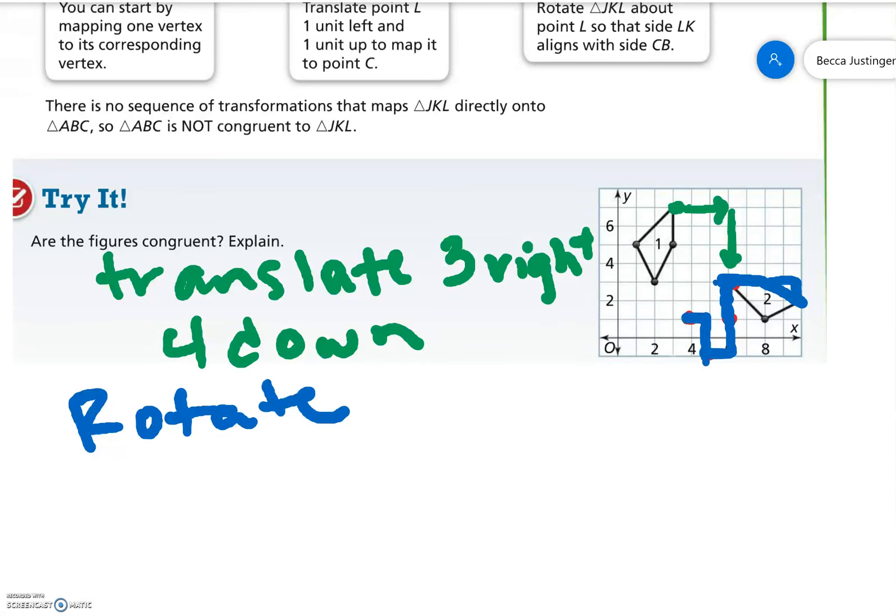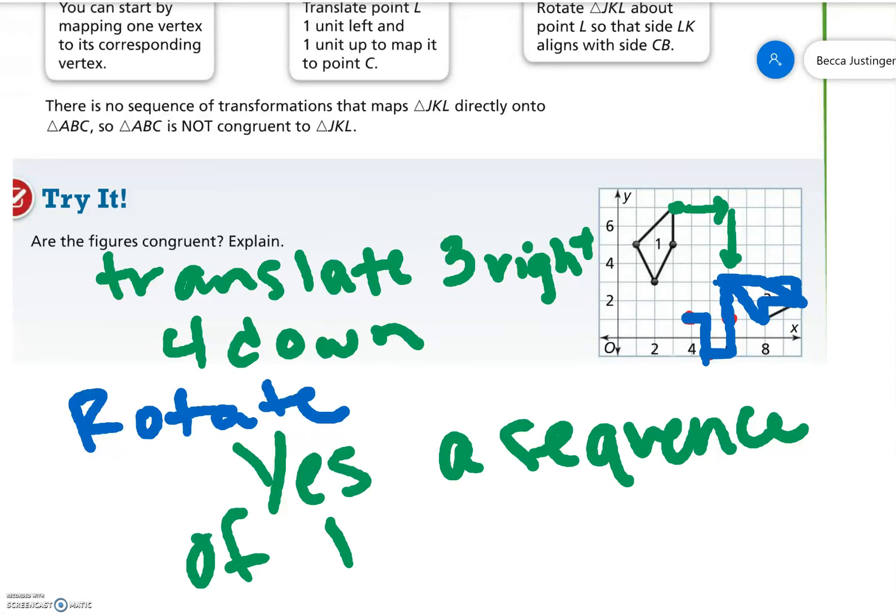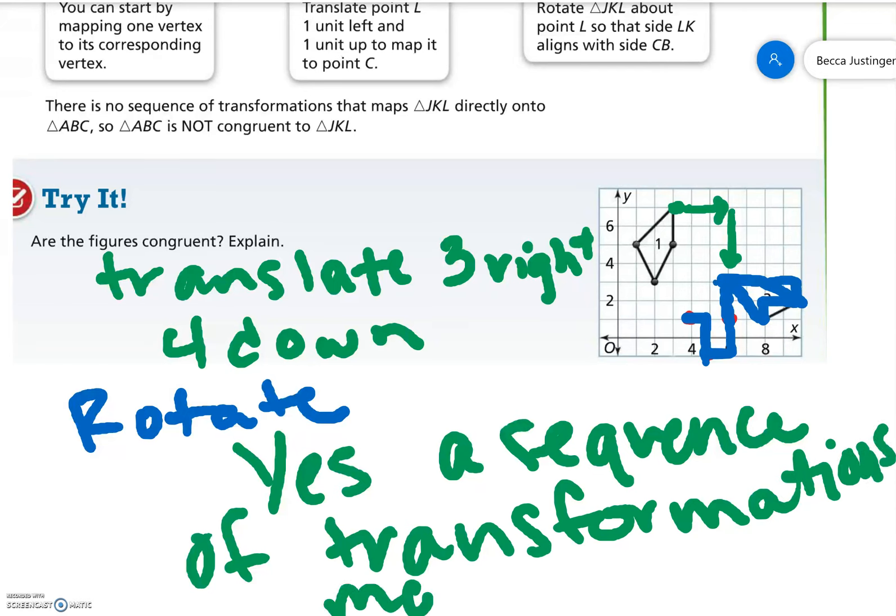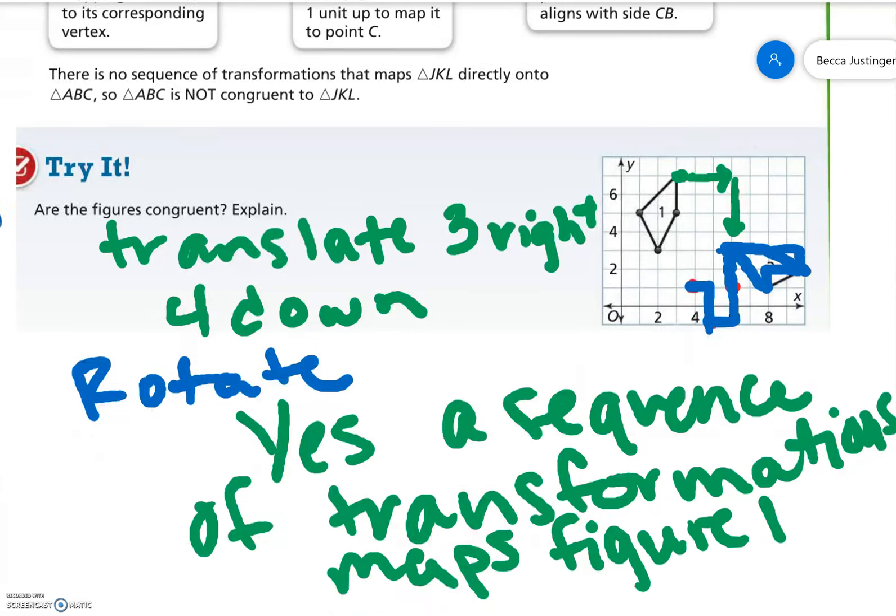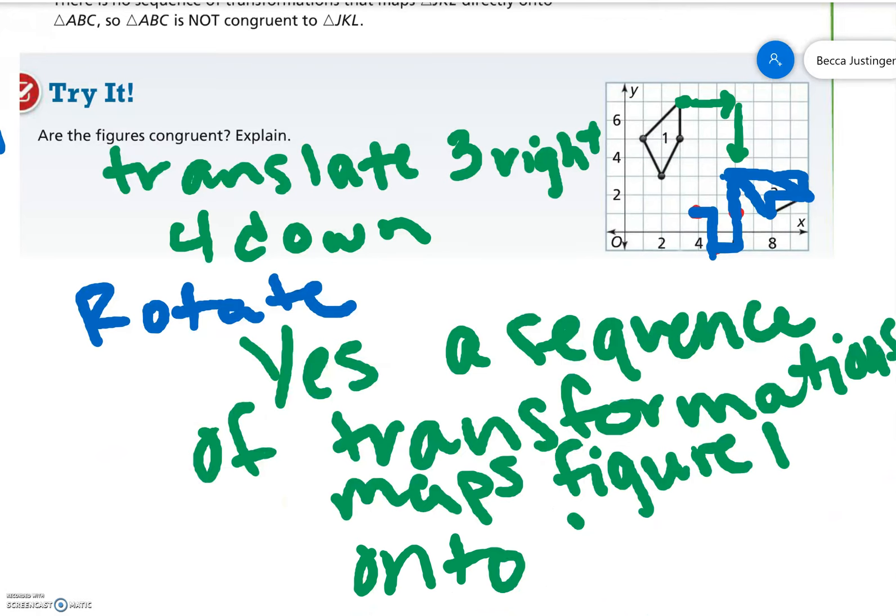Up one over two. I'm sorry, up two over one. So then over two, down one. And it ends up being the same size and the same shape. So yes, a sequence of transformations maps figure one onto figure two. And you would have seen that too by inspection. You could see that these are the same size and the same shape.